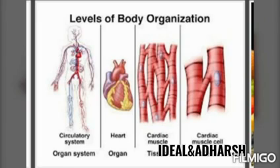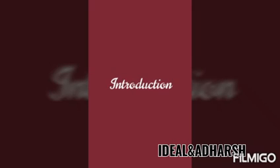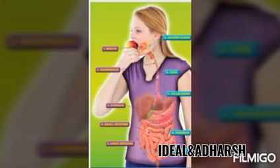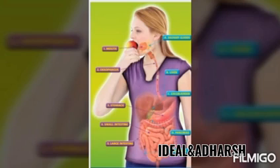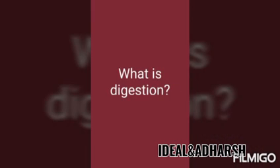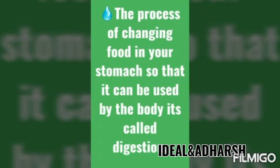In this lesson we are going to discuss the digestive system. Look at this picture — the girl is eating an apple. We get energy for our daily activities from the food we eat. How is food converted into energy? It is through the process called digestion. Digestion is the process of breaking down food into nutrients — changing food in your stomach so that it can be used by the body.